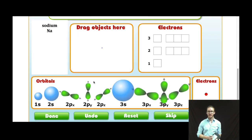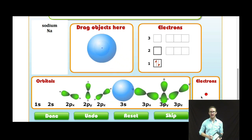What does this look like? How can you better visualize it using this simulation? Always going to start with the 1s. I can fit two electrons. After the 1s comes the 2s. Again, I can fit two electrons.